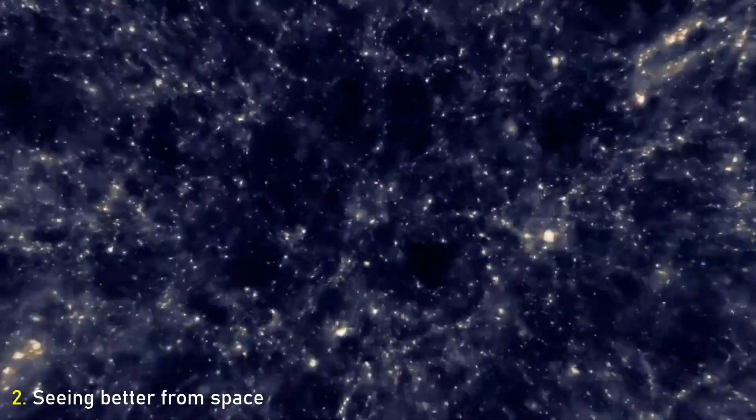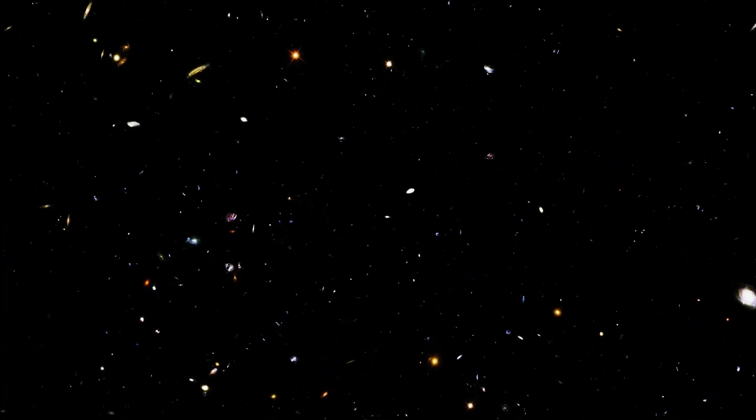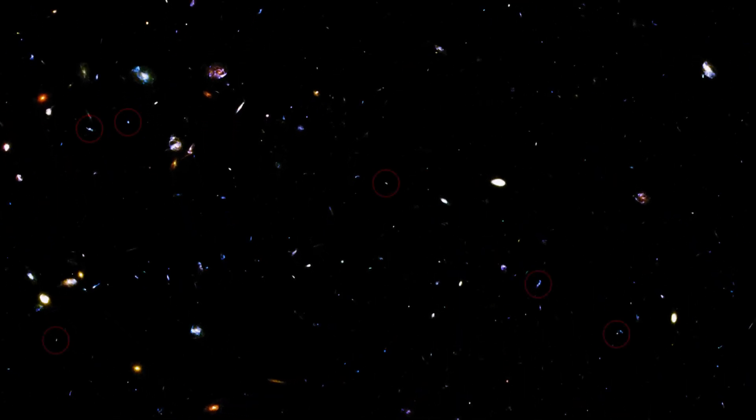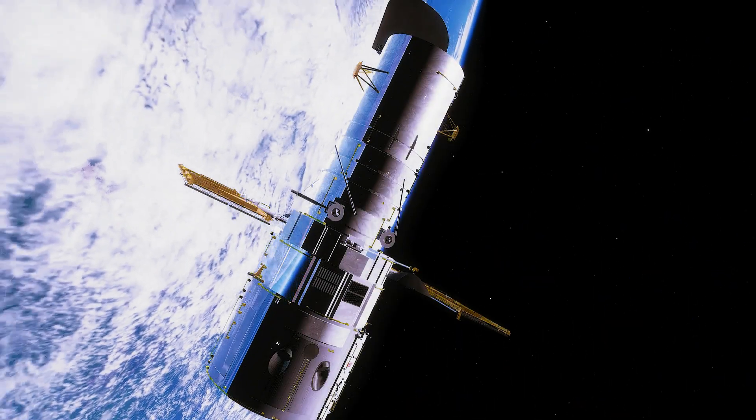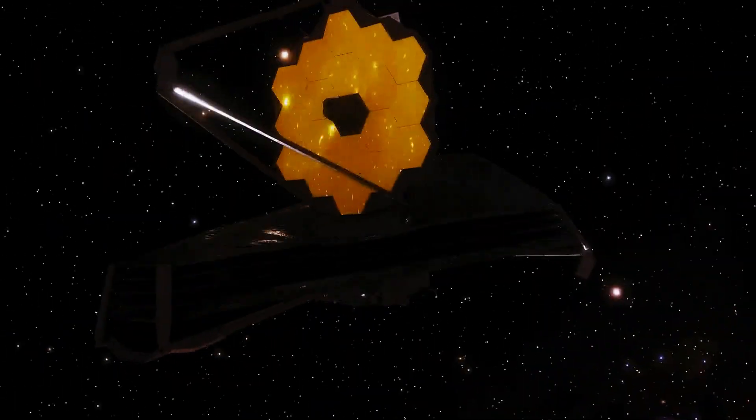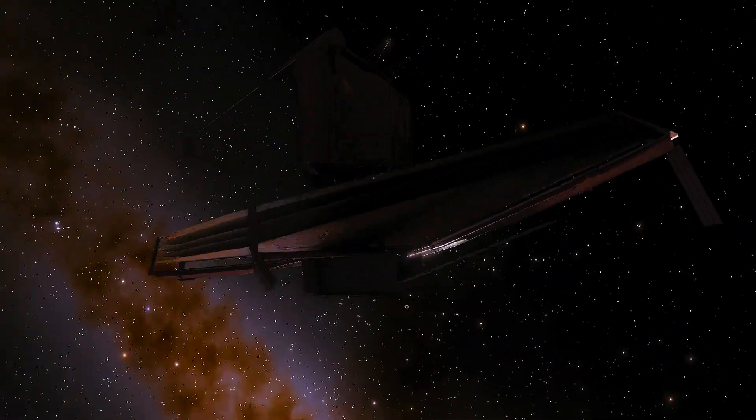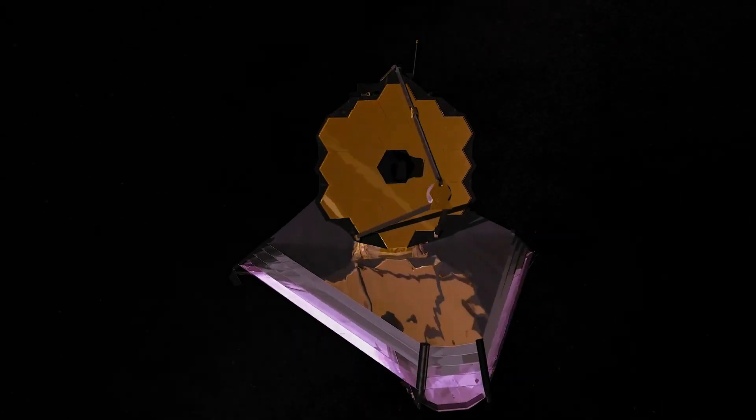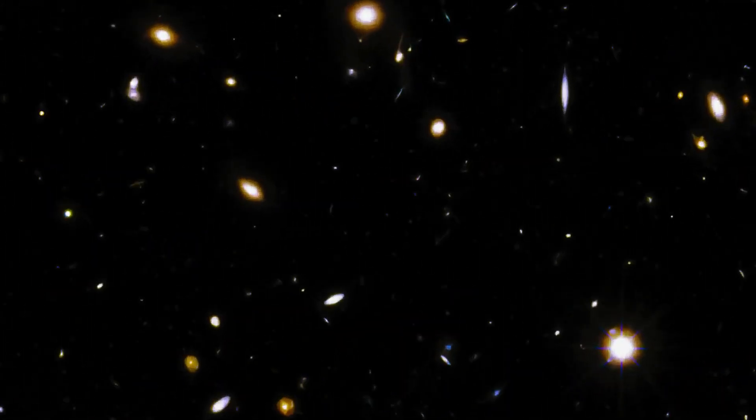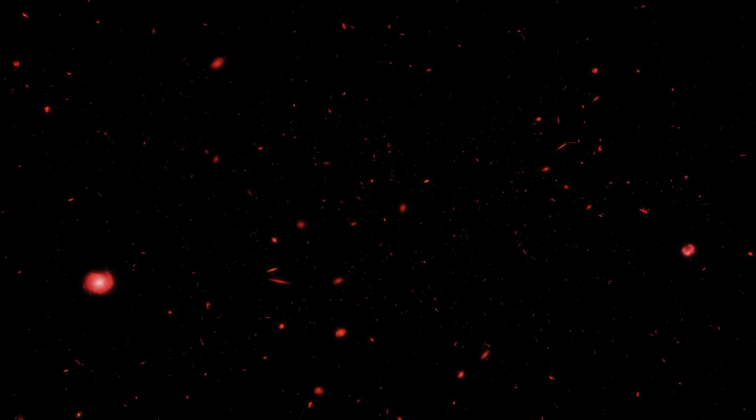Seeing better from space. The extreme faintness of this light is one reason that space telescopes are so useful. Above the obscuring light of Earth's atmosphere, telescopes such as the James Webb Space Telescope, placed in orbit at Lagrange L2 earlier this year and now only beginning its scientific studies, can, for the first time, enable astronomers to study this ghostly light.